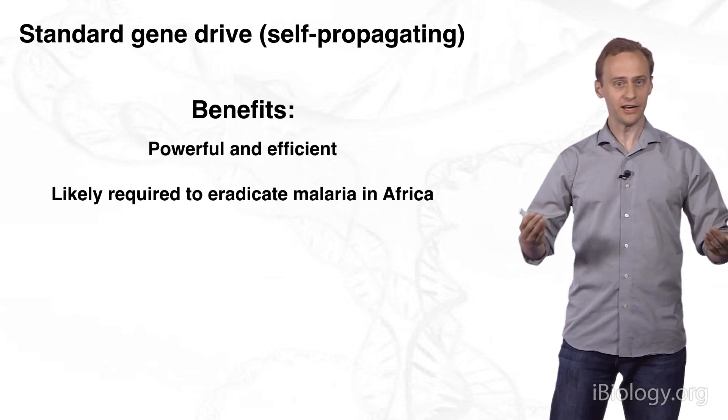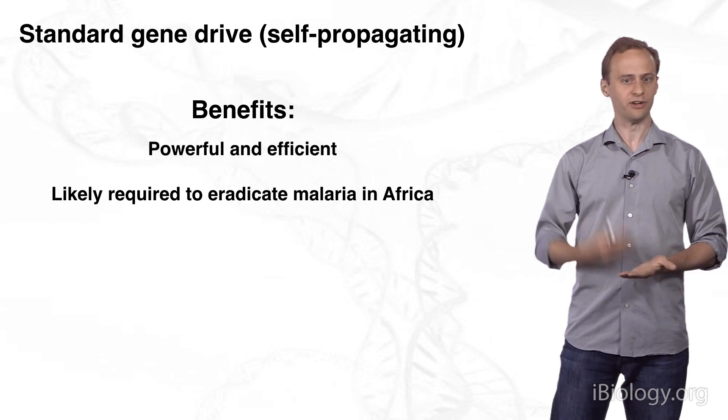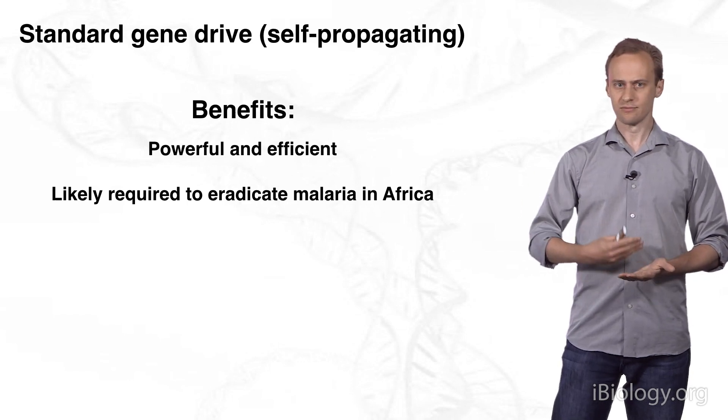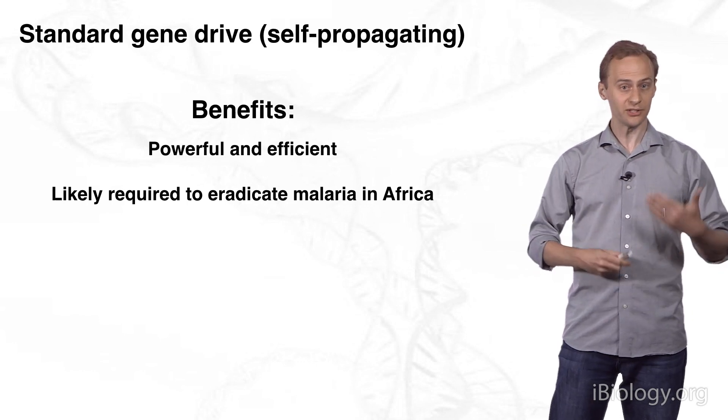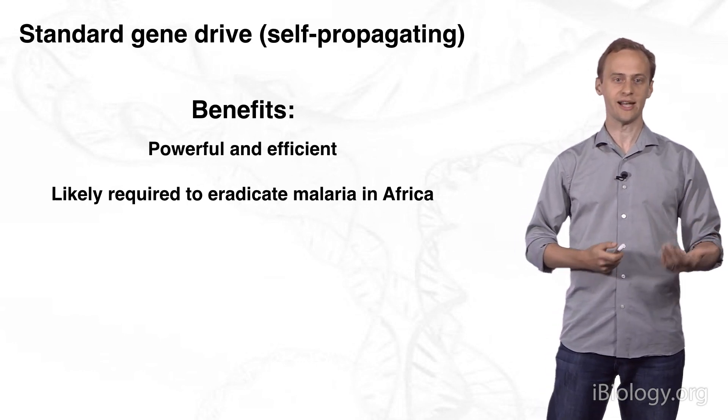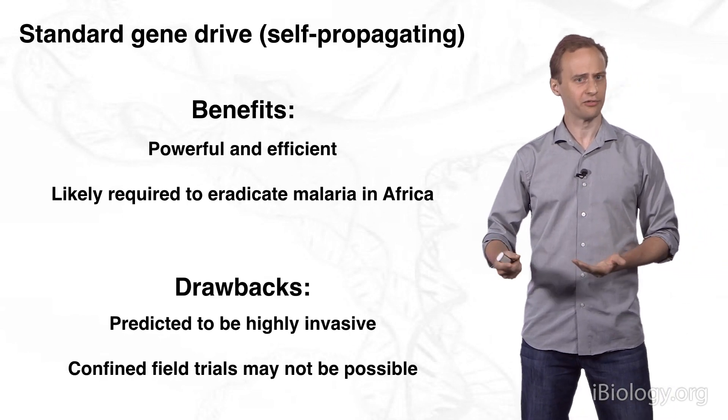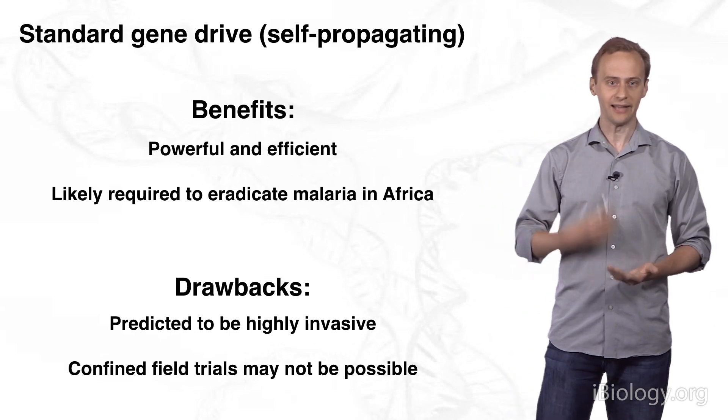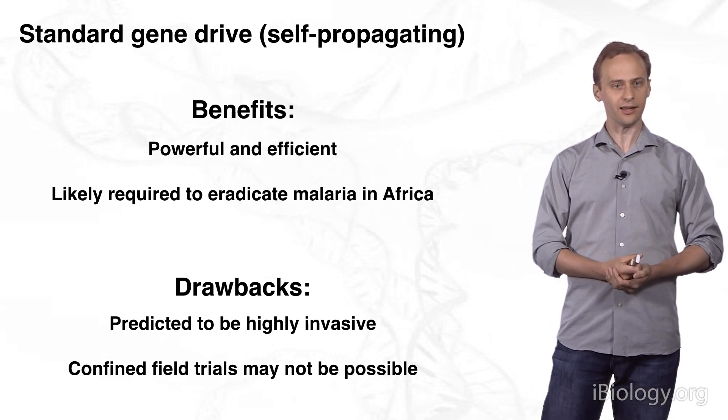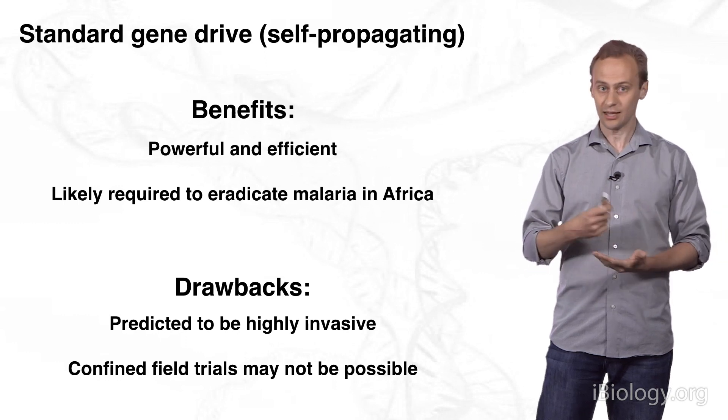Self-propagating standard gene drive systems have a number of benefits. They're powerful and efficient, and that is likely to be required for the most important application, which is the potential eradication of malaria in Africa. But they also have a number of downsides that rule them out for the vast majority of other applications. Specifically, they're predicted to be highly invasive. That means that it's likely to be very difficult to run confined field trials, if possible at all.